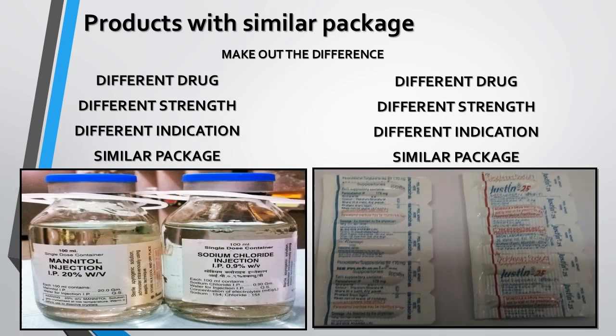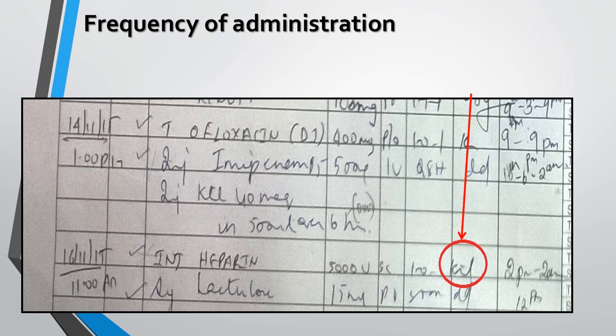Both diagrams contain drugs with similar packaging and appearance, while they are totally different in name, indication, and strength. The frequency of administration shown is illegible, which can lead to error — in such cases, it should be referred back to the physician.